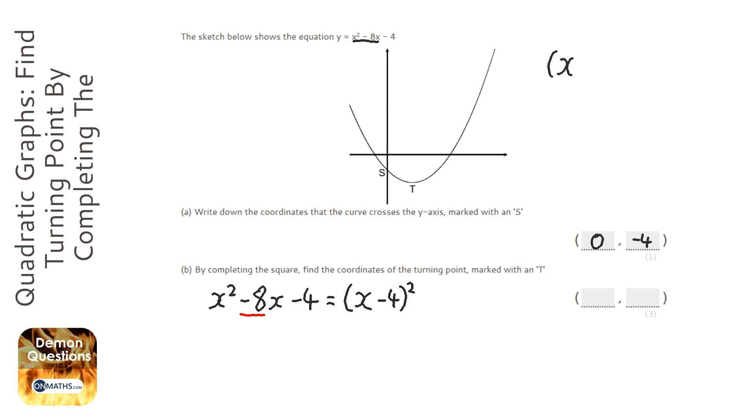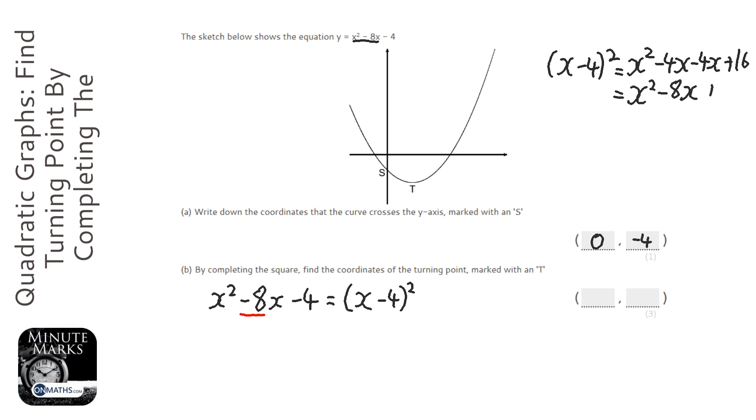Now if I expand that up here, x times x is x squared, then you have minus 4x minus 4x and plus 16. So we have x squared minus 8x plus 16.